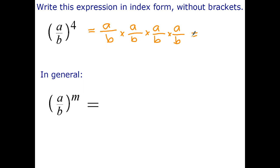Now if you recall your rule for multiplying fractions, we just multiply the numerators a by a by a by a is a to the fourth, b by b by b by b is b to the fourth. So here's an expression with brackets and it can be rewritten as an expression without brackets.